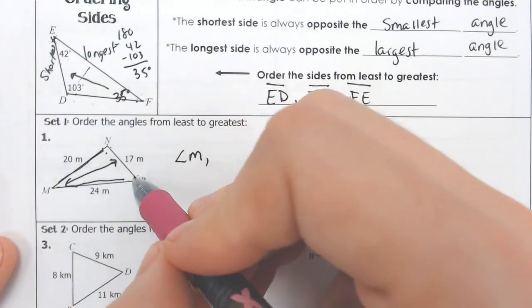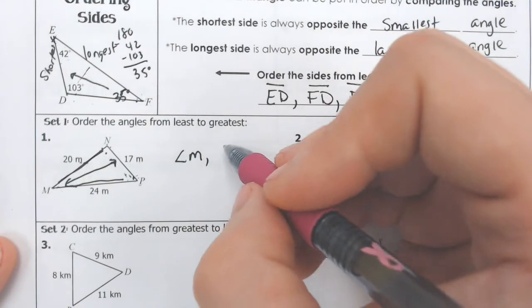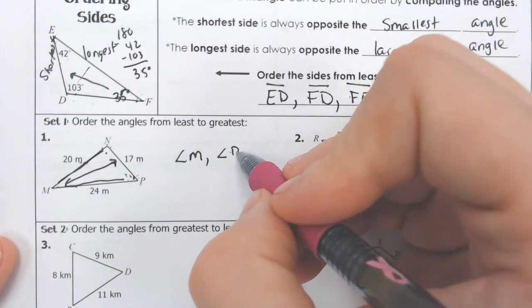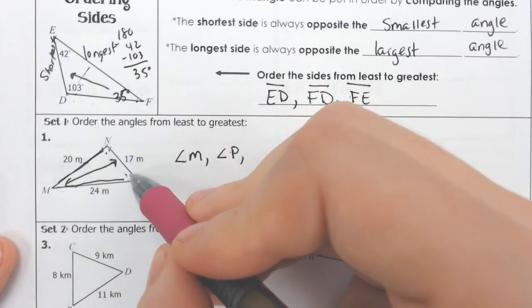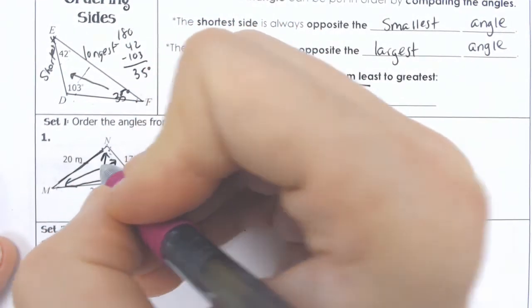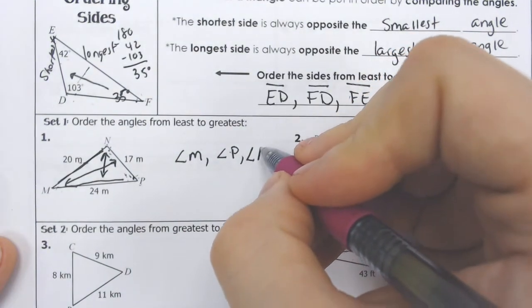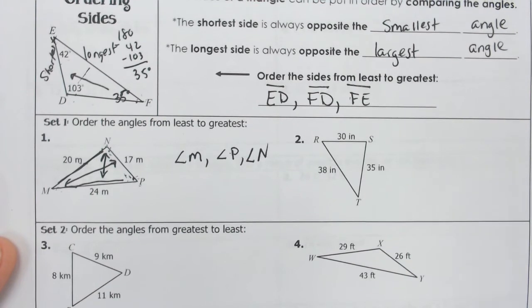That's the one that is across from it. It is the side that is not touching it. So angle P. And last but not least, we have angle N, which is opening up from the 24. So this would be the longest side and therefore the biggest angle.